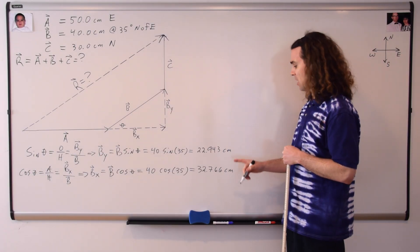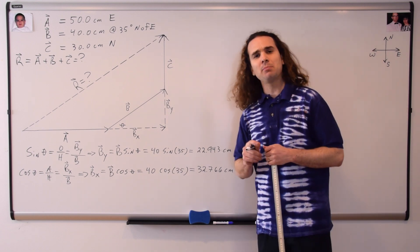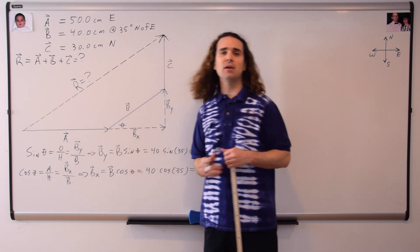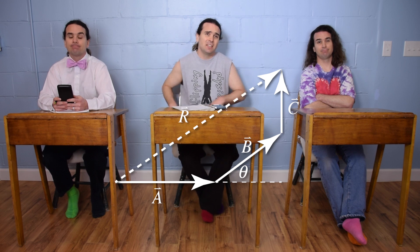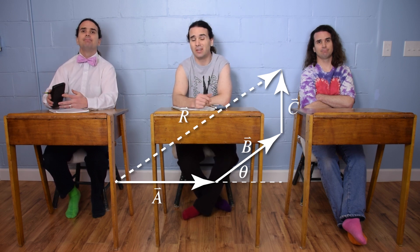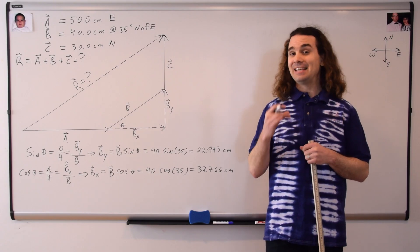Great, now we have the component vectors of B in the x direction, and B in the y direction. Bobby, please explain to me why we don't need to break vectors C and A into their component vectors. Oh, because A and C are already directly in either the x or y direction, and therefore they don't need to be broken into components in the x or y direction. Yes.